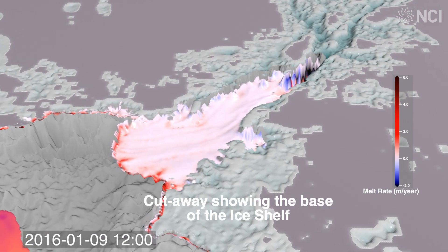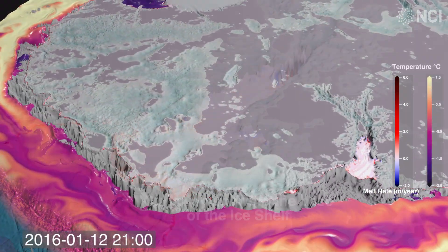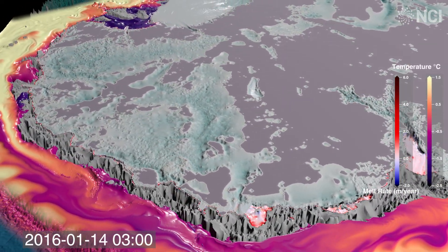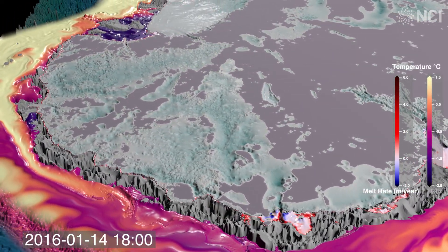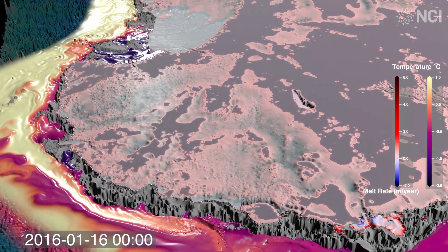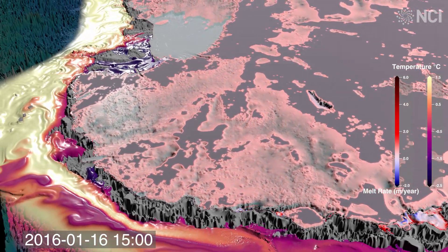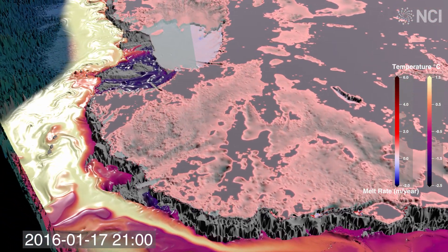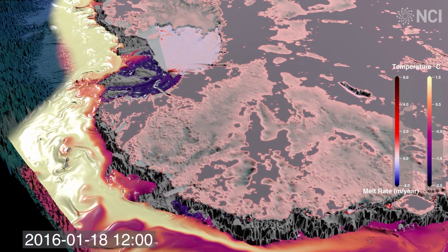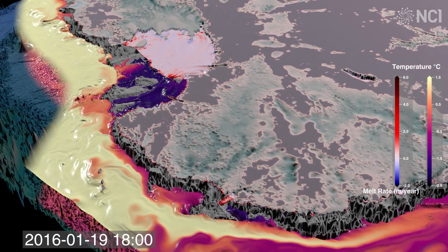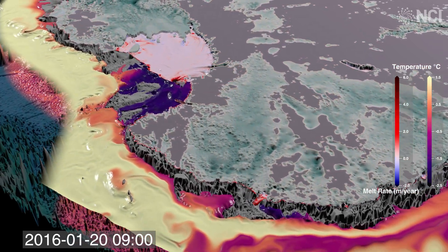The glaciers of East Antarctica are of particular importance, as they hold more sea level rise potential than any other region on Earth. Here, large parts are grounded below sea level, and intrusions of deep, warm water could trigger a rapid, runaway retreat.